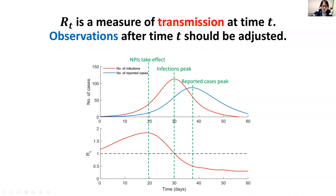At day 20, the public health authority already implemented some non-pharmaceutical interventions and these start to take effect, but the number of reported cases is still very low. Sometimes the public may question why the government implemented interventions so early. But even when interventions take effect around day 20 and continue until day 30, RT drops below one and infections peak around day 30. Yet the number of reported cases is still rising — it only peaks around day 38. So there's always a delay between transmission events and observations.